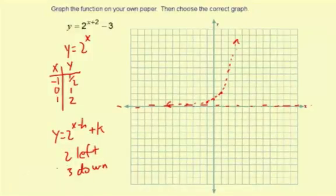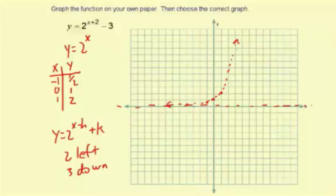So let's go ahead and shift this graph, 2 left and 3 down. So I'll start with the furthest point on the left, the negative 1, 1 half. And then we'll go left 2, 1, 2. And then 3 down, 1, 2, 3. That will put it right here.